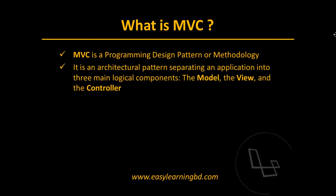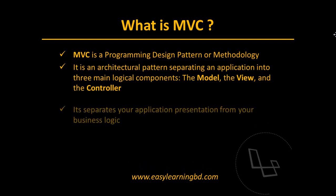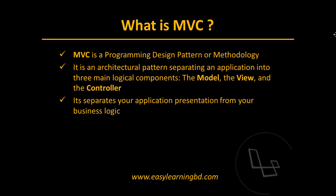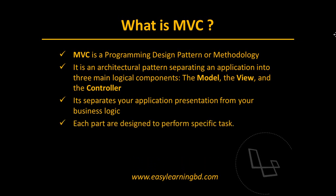In MVC you will get three components: M is for the Model, V is for the View, and C is for the Controller. Every component of each part is designed to perform a specific task.